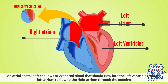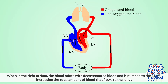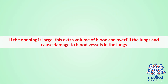An atrial septal defect allows oxygenated blood, that should flow into the left ventricle from the left atrium, to flow to the right atrium through the opening. When in the right atrium, the blood mixes with the deoxygenated blood and is pumped to the lungs, increasing the total amount of blood that flows to the lungs. If the opening is large, this extra volume of blood can overfill the lungs and cause damage to blood vessels in the lungs.